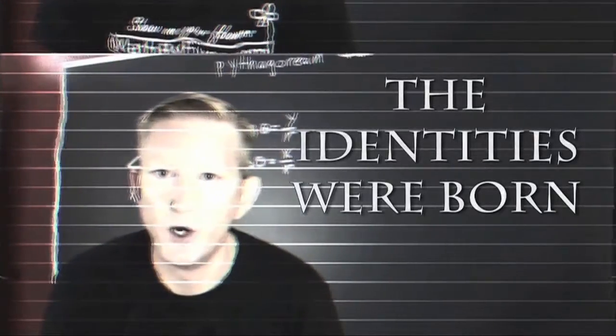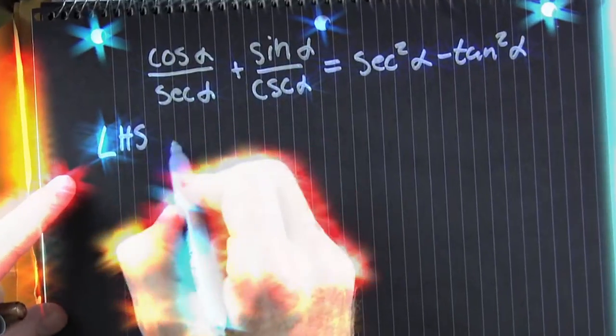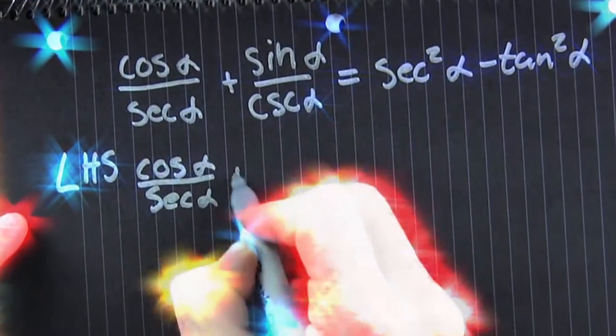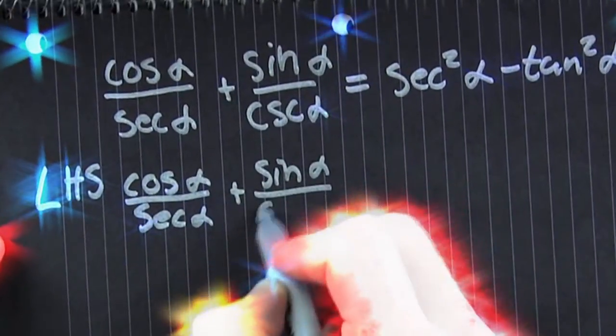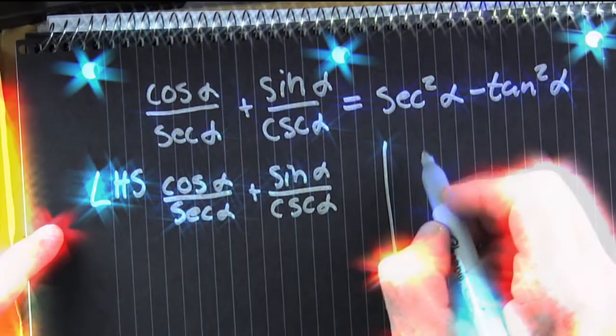And this is where the identities were born. You gotta work to save that princess. You're gonna write down the left-hand side of this proof, because you're not lazy. And you do. Cosine alpha over secant alpha plus sine alpha over cosecant alpha.